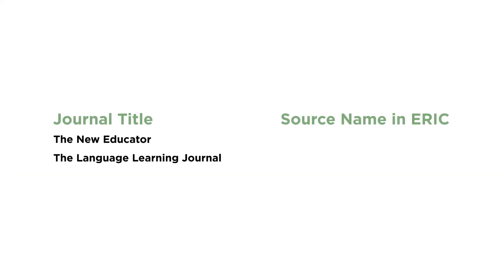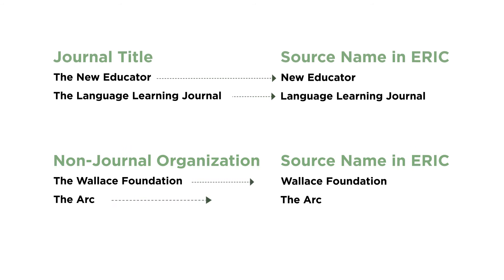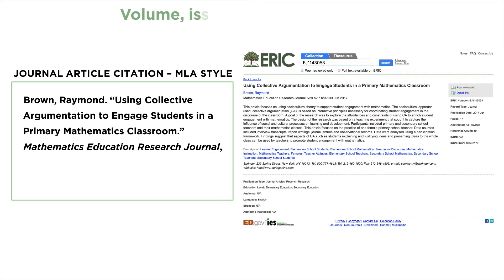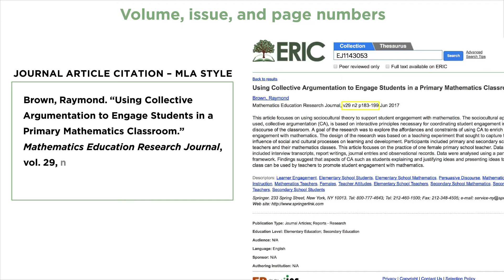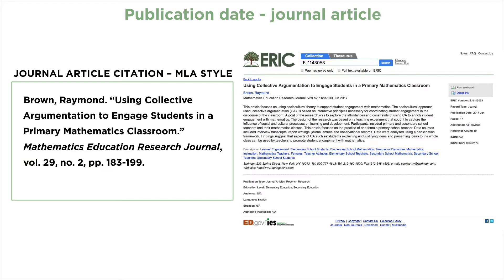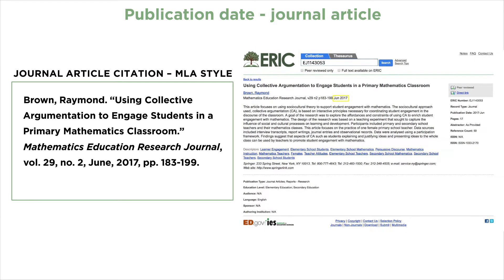You should be aware that ERIC usually drops the initial article, such as 'the' or 'a,' from the name. Some style guides require the article, so it is good practice to check the source name on the article or document. The volume, issue, and page numbers pertain to journal articles and are found following the journal name in the record. Records for journal articles include the publication date on the same line as the journal name. Note that the MLA format places the publication date before the page numbers in the citation, which varies from the format in the ERIC record.